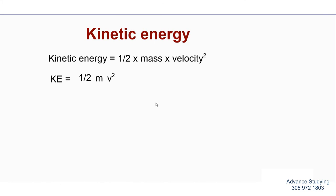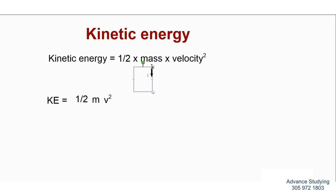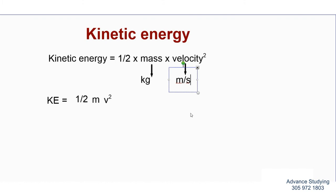What are the values of these variables? Let's label them. Half is just half. The mass will be measured in kilograms — that's what we use for mass. For velocity, we use units of meters per second.